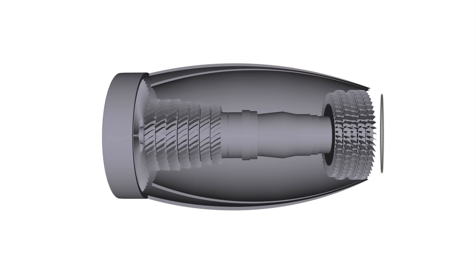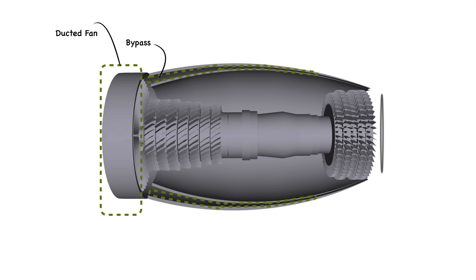Let's examine the major parts of the turbofan. In the front of the engine there is a ducted fan. Inside the engine there is a bypass, as shown by the dotted lines. This bypass and the ducted fan are the parts which make the turbofan different from other gas turbine engines.